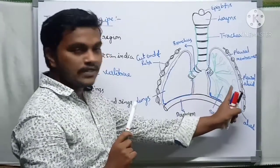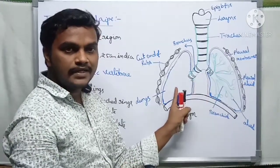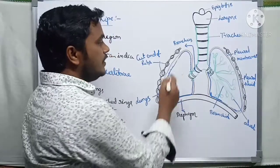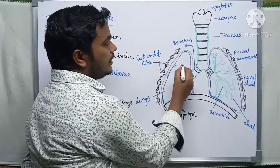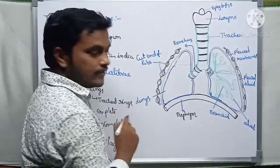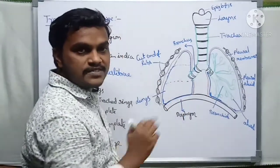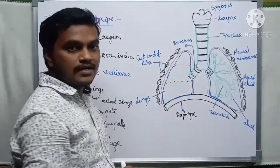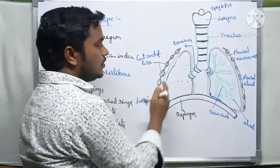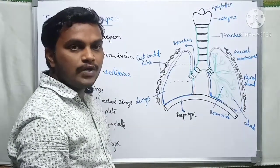The left lung is smaller compared to the right lung. The right lung, which is larger, has three lobes: the superior (anterior), median, and posterior lobes. These two lungs are protected by a double-layer membrane called the pleural membrane.